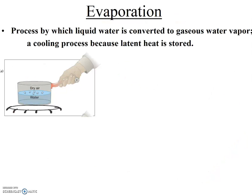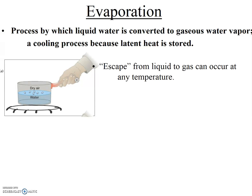Let's step back and get to the real topic of this video clip, which is evaporation. Your book gives a good definition of evaporation: the process by which liquid water is converted to gaseous water — a cooling process because latent heat is stored. So what is happening during evaporation? The hydrogen bonds that hold liquid water together are being broken, and notably this can occur at any temperature.